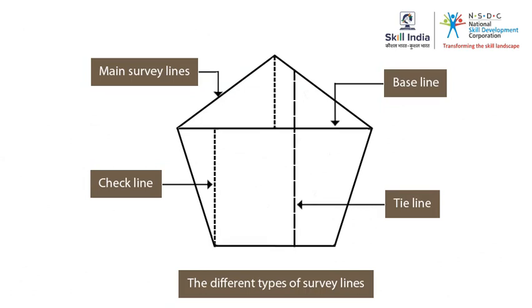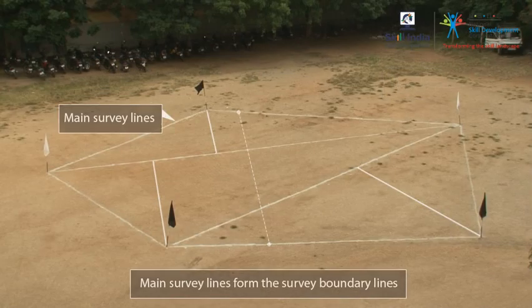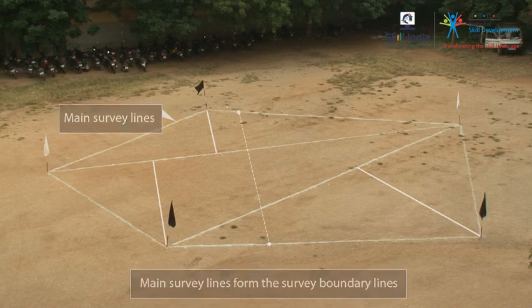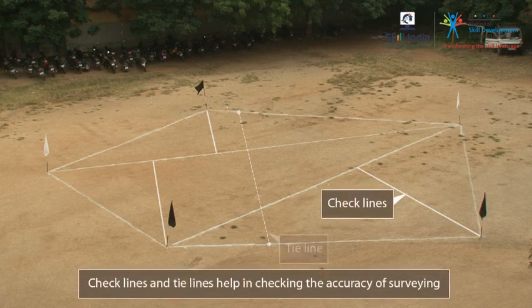The different types of survey lines are main survey lines, the baseline, check lines, and tie lines. Main survey lines form the survey boundary lines of the area. The baseline is the longest line between two main stations. Check lines and tie lines help in checking the accuracy of the surveying work.